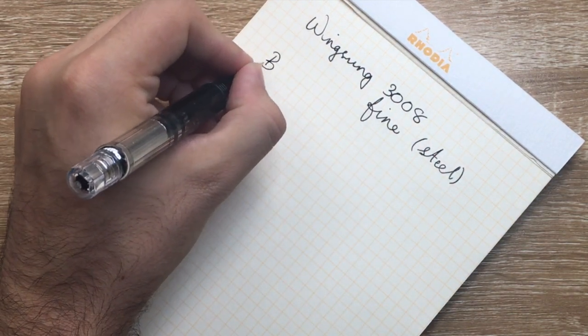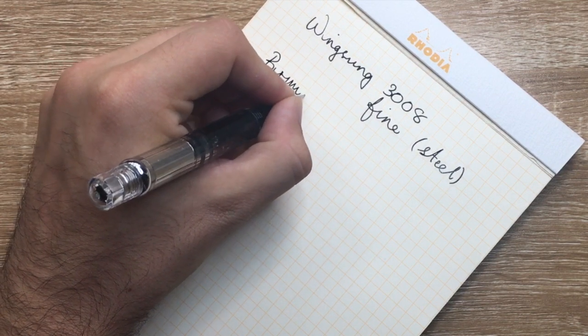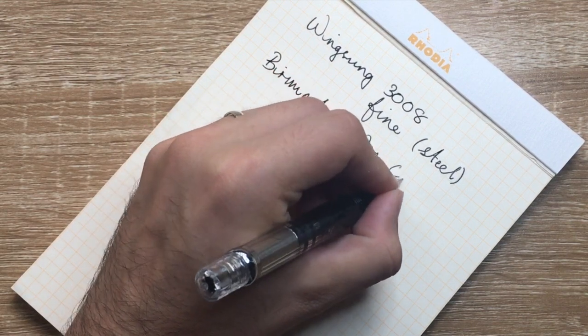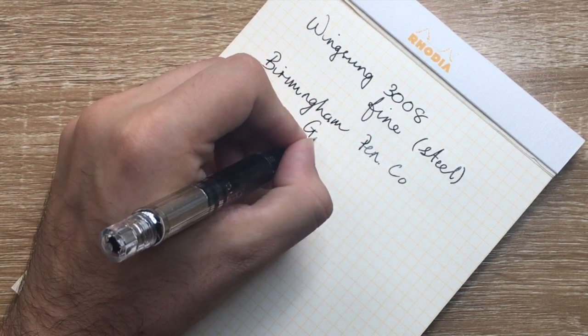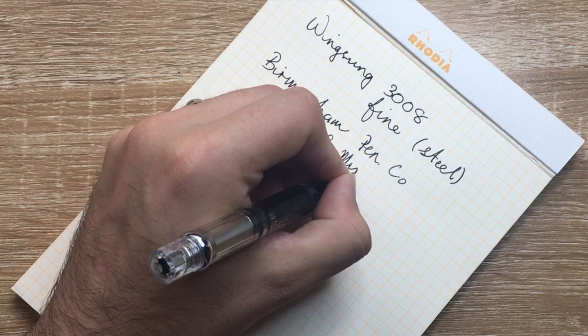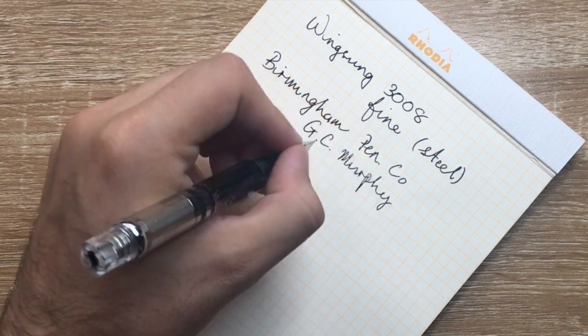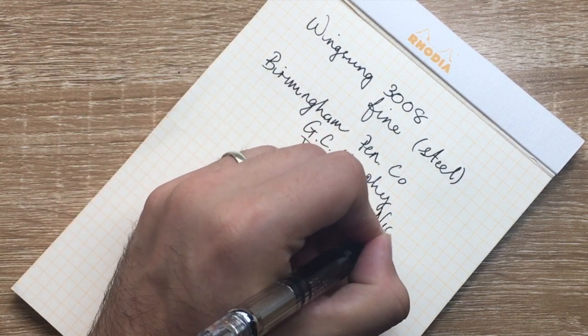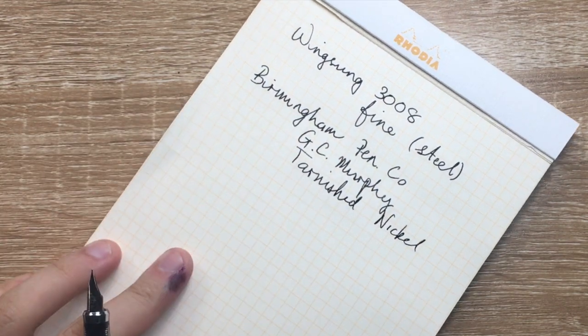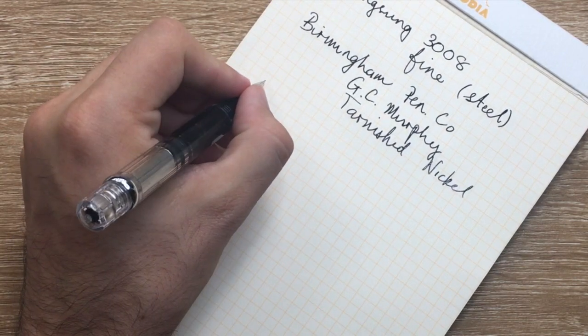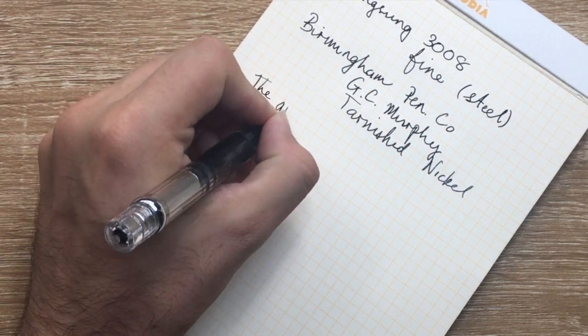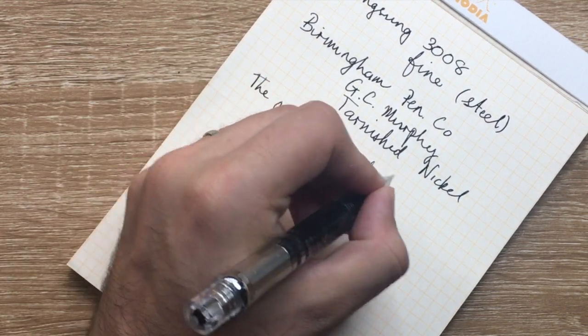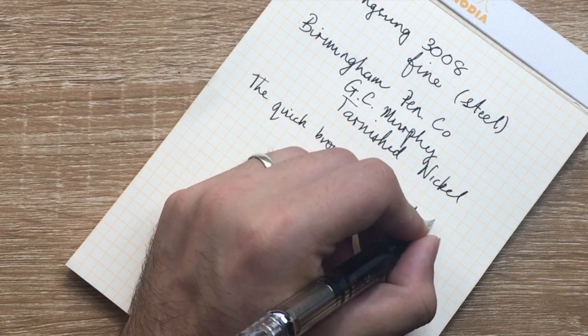And the ink here is Birmingham Pen Company GC Murphy tarnished nickel. Now you can already see probably that this is writing super wet. Let's do the quick sentence. The quick brown fox jumps over. That'll be enough.